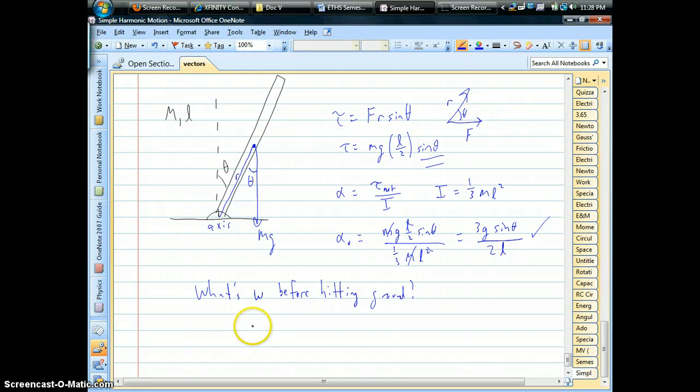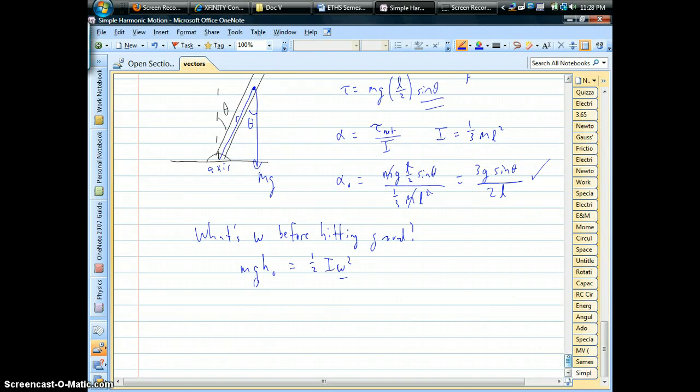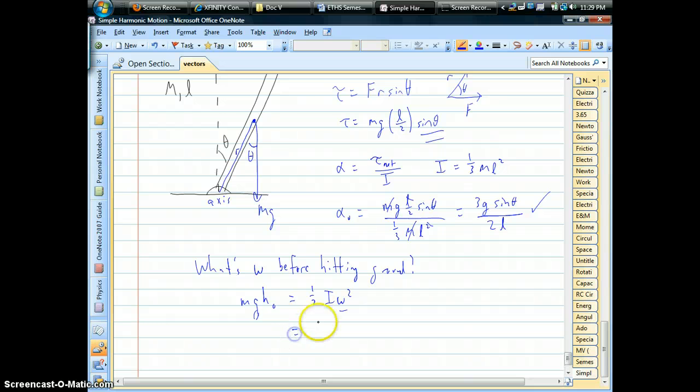So, if the thing started off at rest, if we're just holding it at some initial angle, it has potential energy. Okay, and when it is released, and it's just about to hit the ground, when it goes horizontal, the potential energy would be zero at that point. And so all of your energy would be in the form of that rotational kinetic energy, one-half I omega squared. We're looking for omega right there. Okay, so we already know what the inertia is.